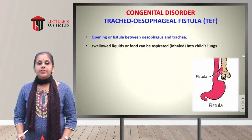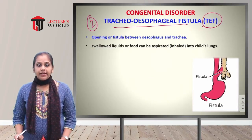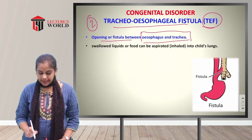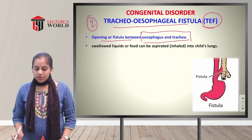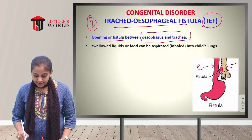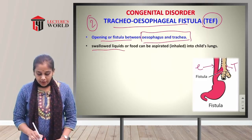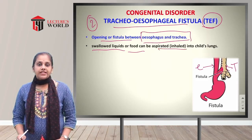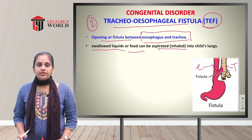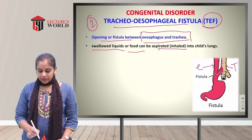The second congenital disorder of the esophagus is tracheoesophageal fistula (TEF) — an opening or fistula between the esophagus and trachea. Because there is a connection between the trachea and esophagus, swallowed liquids or food can be aspirated or inhaled into the child's lungs. This is a rare birth defect or congenital abnormality.